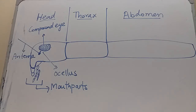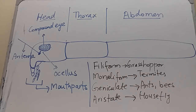One pair of antennae is present in the insect head. The antenna is basically the nose of the insect and is also known as feelers. Antennae are sensitive to touch, smell, and vibration. There is a lot of variation in antennae: filiform antennae are found in grasshoppers, moniliform antennae in termites, geniculate antennae in ants and honey bees, and aristate antennae in house flies.